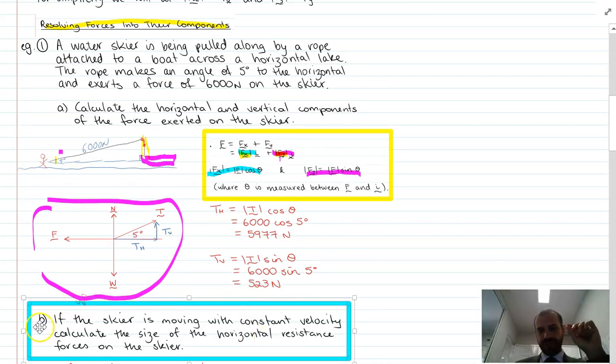The second part of this question in blue says: if the skier is moving with constant velocity, calculate the size of the horizontal resistance forces on the skier. If you're skiing along water, the water is providing some sort of resistance like friction. How much is that? It comes down to this idea of constant velocity.